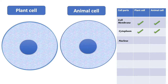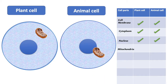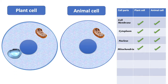This is the nucleus. It is the brain of the cell — it controls all the cell activities. This is the mitochondria, and it is the powerhouse of the cell. The plant cell has one, and the animal cell has one.